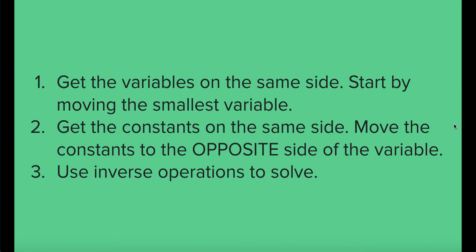Our goal with multi-step equations and inequalities is to get the variables on the same side. We start by moving the smallest variable. Then we get our constants on the same side. We want to make sure we're moving the constants to the opposite side that the variables moved to. We're going to use inverse operations to solve today.